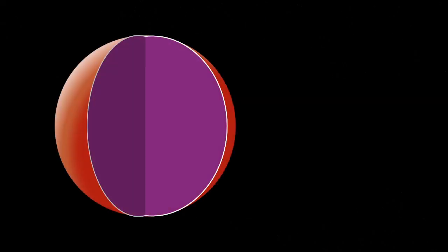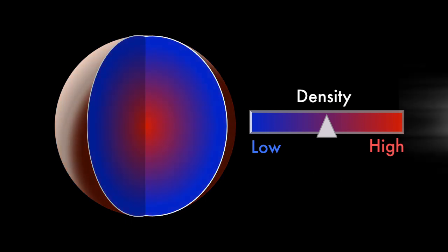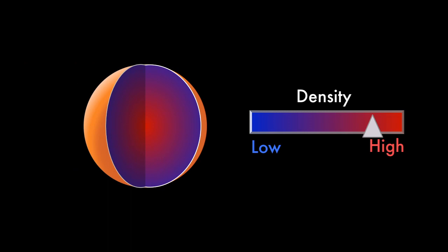When planets form, the lighter materials rise, and denser ones sink to the core. Remove the outer, lighter layers, and you're left with a denser planet once what's left cools off.